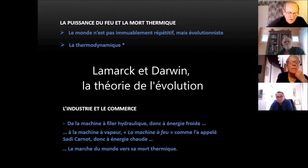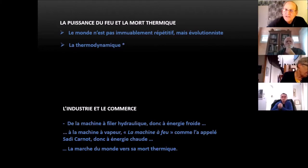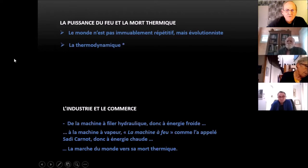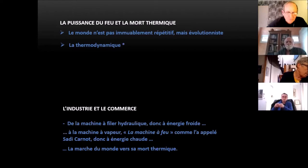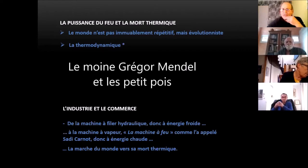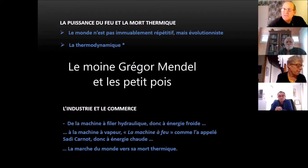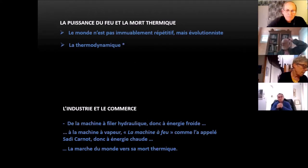Deuxième élément important qu'apporte la science, c'est la théorie de l'évolution avec Lamarck et Darwin. Notamment quand on a découvert le Neandertal en Europe, qui a montré que l'homme descendait du singe — toutes les croyances religieuses de l'époque ont été perturbées. Et puis dernier élément pour montrer que le monde devient évolutionniste, c'est le moine Mendel qui a croisé des petits pois et qui a montré l'influence de la génétique dans le vivant. Le monde n'est pas immuablement répétitif, mais il est évolutionniste.